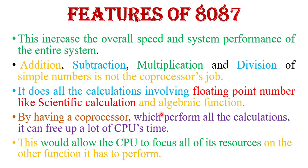By having a coprocessor which performs all the calculations, it can free up a lot of CPU time. So the CPU of 8086 focuses all of its resources on the other functions it has to perform. That increases the system performance.